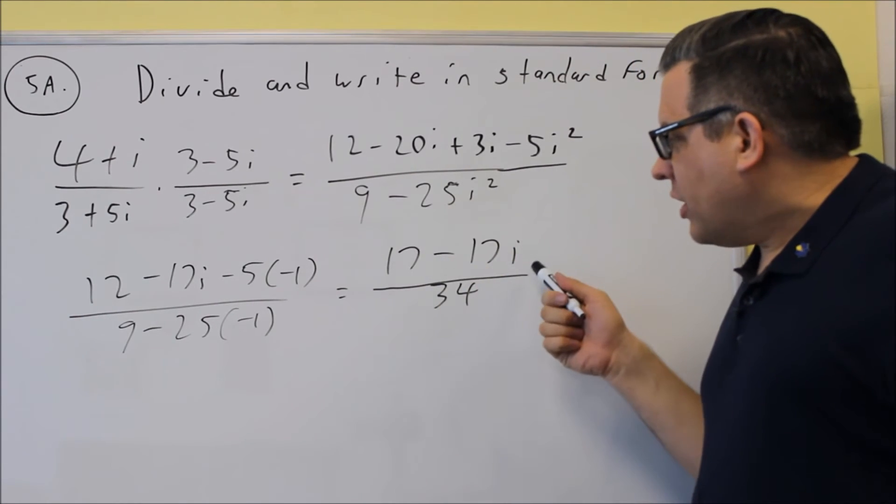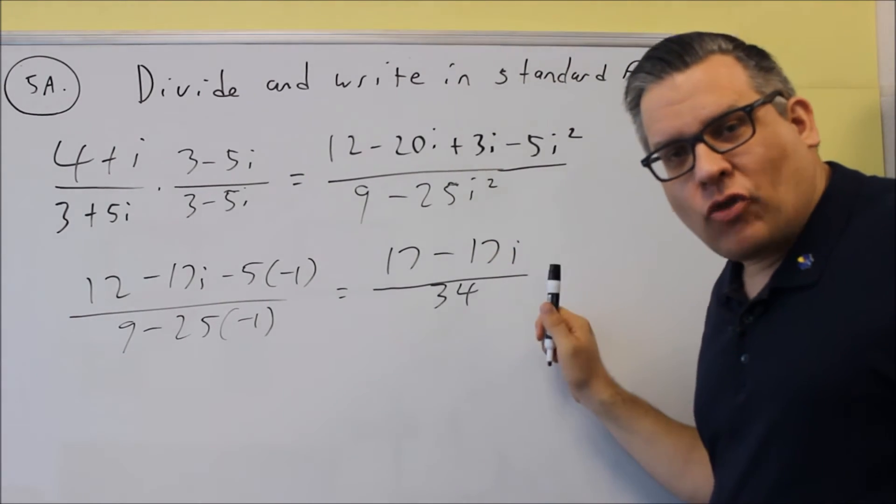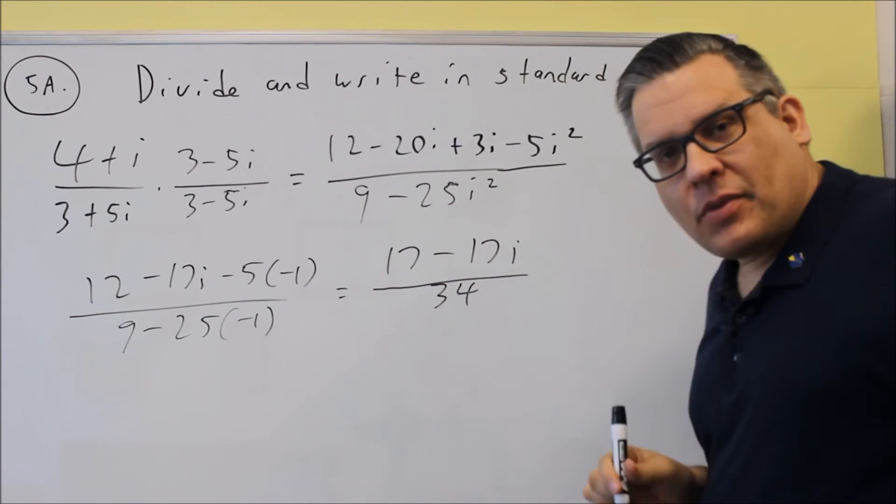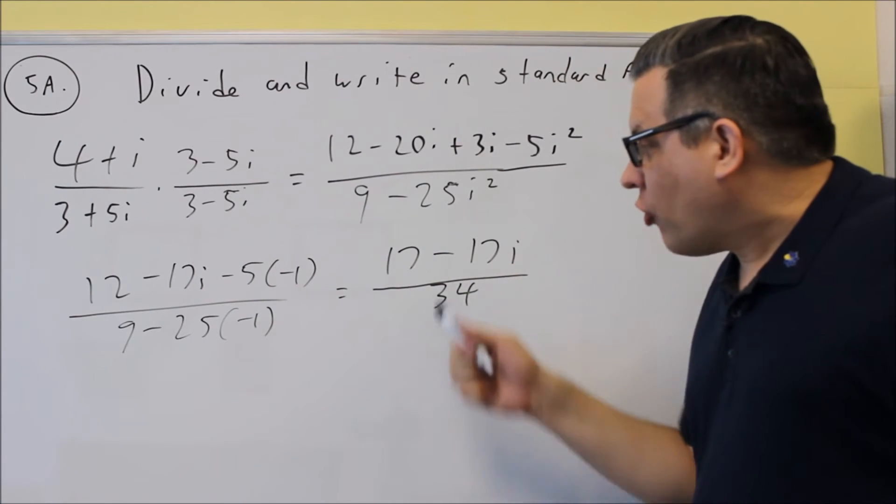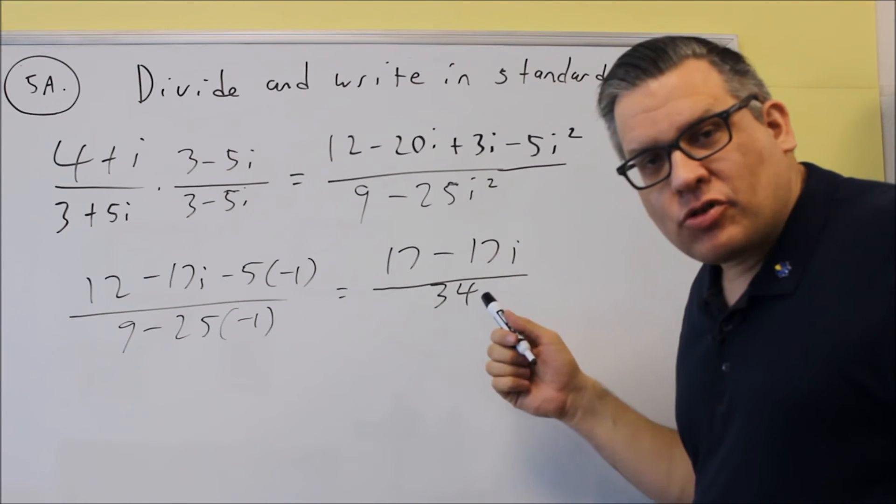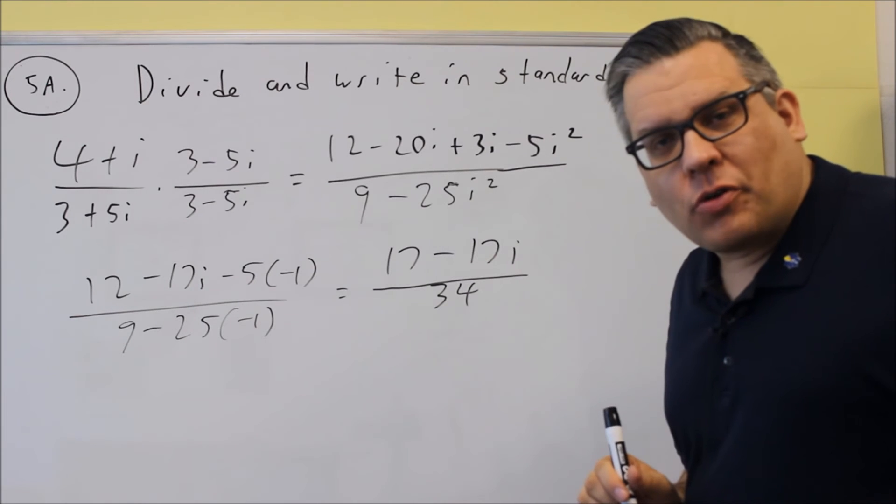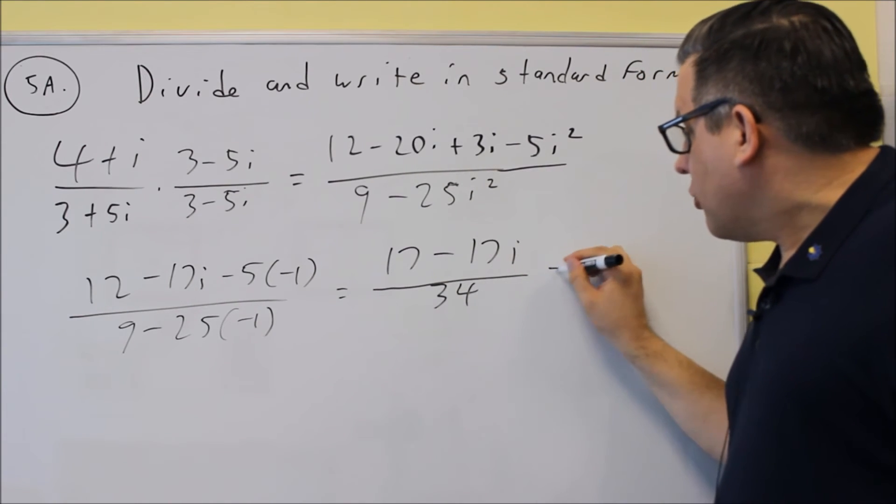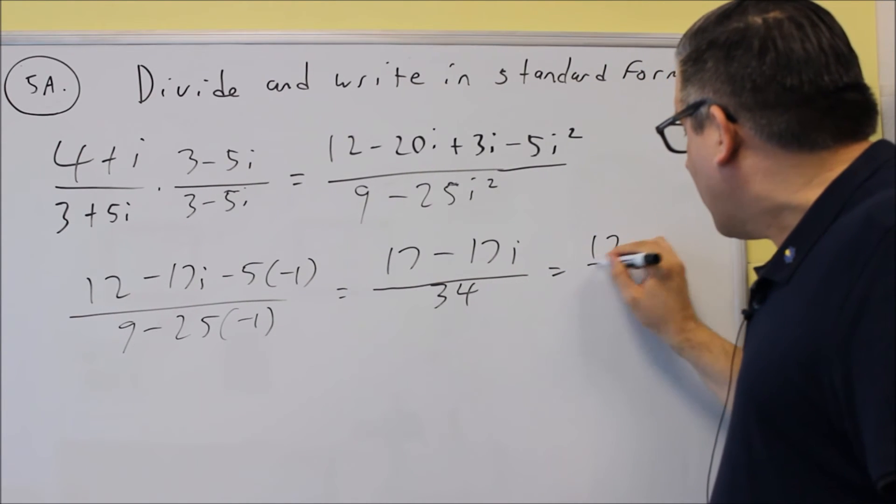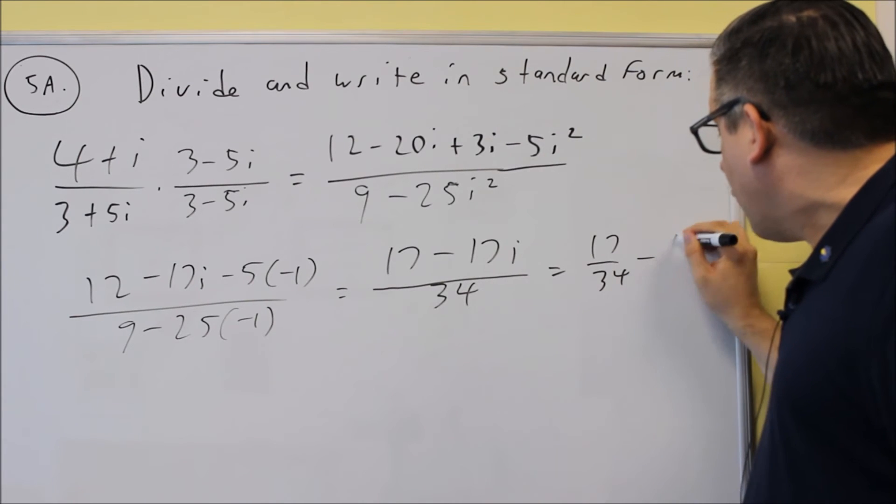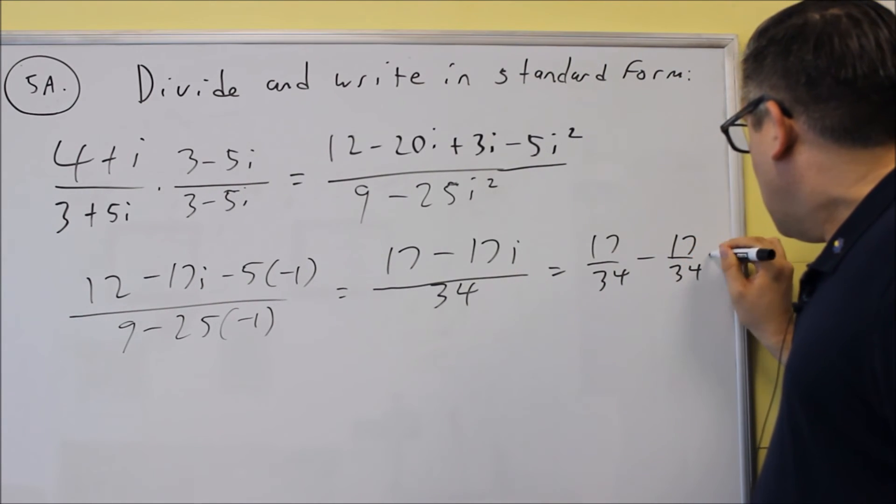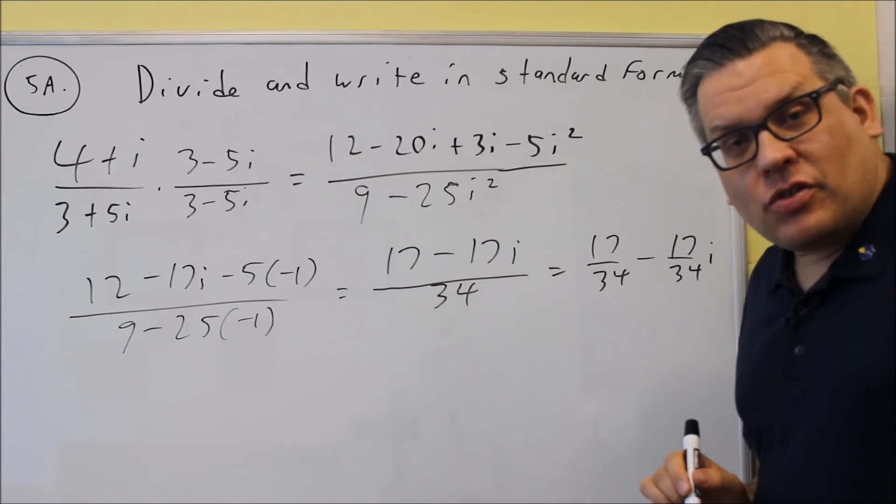Now, this one right here, you don't want to leave it in this form. This is not standard form. In standard form, you have to get the two separate terms, the i term separately and then the numerical term separately. So what I want to do is one more step, I want to divide everything top and bottom by 34, and that would put it into standard form.